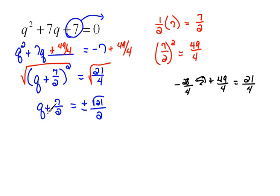Now we still need to get q alone. So we're going to do that by subtracting that 7 halves from both sides to move it. So this would be q equals negative 7 halves plus or minus the square root of 21 over 2.